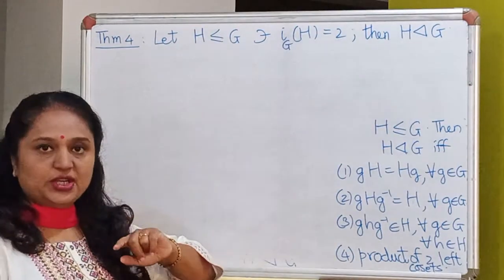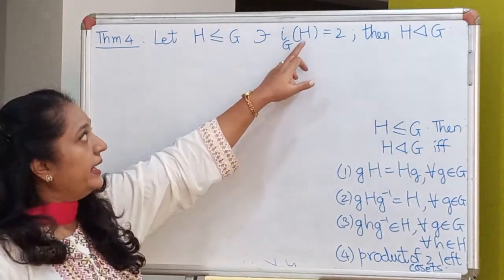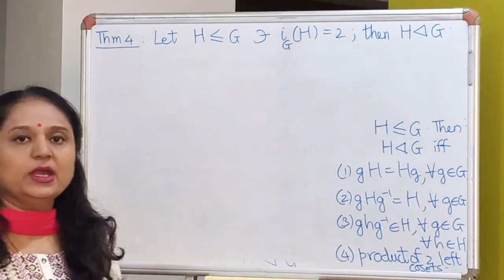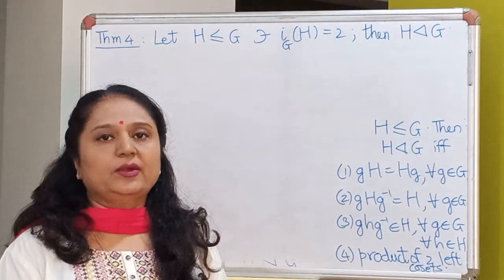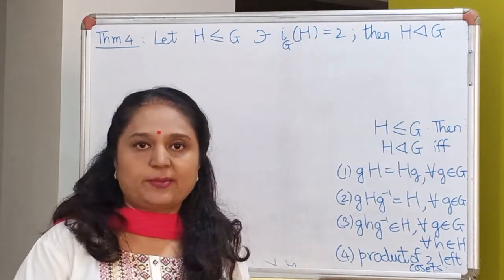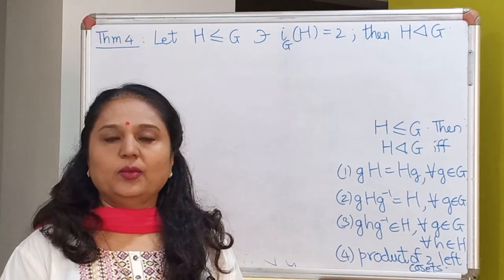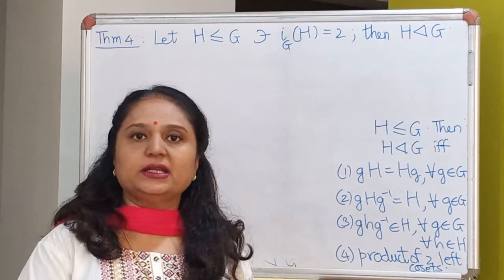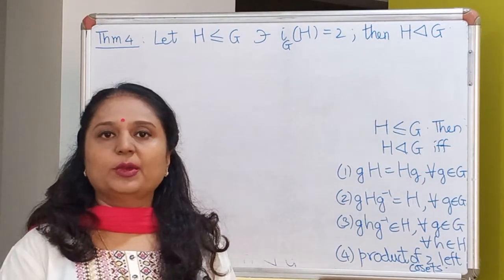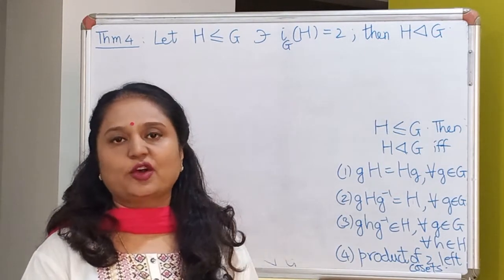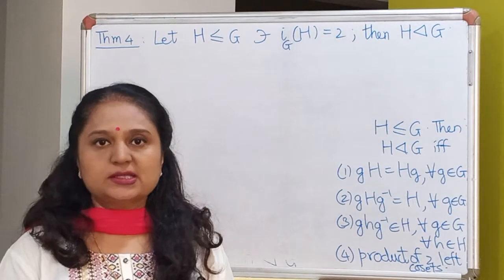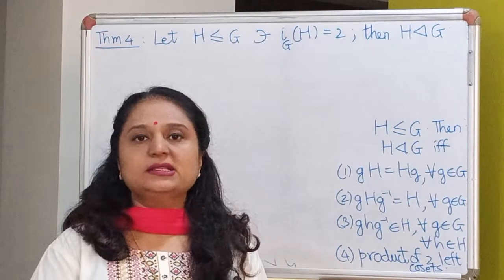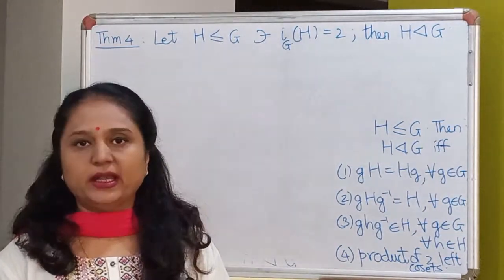Suppose H is a subgroup of G and the index of this subgroup is 2, then H has to be a normal subgroup of G. Recall that we defined the index of a subgroup as the number of distinct left cosets of H in G, or the number of distinct right cosets of H in G — both are the same. This number is called the index.